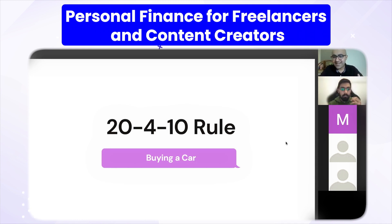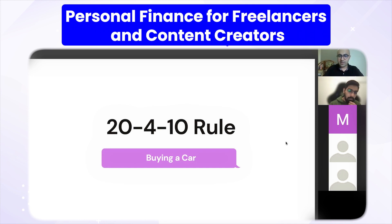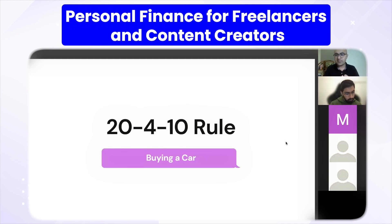20-4-10 also means: if you're taking a car loan, try to pay 20% of the car cost as a down payment, take a loan that doesn't go beyond 4 years, and your EMI — including fuel cost and car repair costs — should ideally not be more than 10% of your monthly disposable income. That's another way to calculate the right car value to buy.